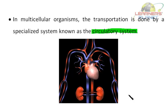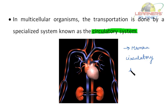Here is a diagram of the human circulatory system. Human beings are multicellular organisms. Here you can see the structure of the heart, and here you can see the two kidneys. The red vessels running throughout the body are arteries and the blue ones are veins. The circulatory system basically consists of arteries, veins, and other blood vessels, as well as the heart.